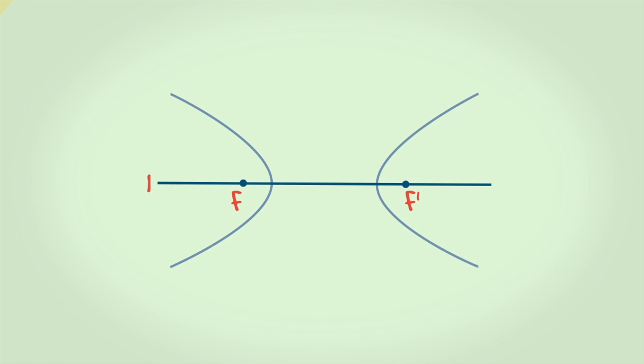La recta L que pasa por los focos se denomina eje focal. Esta corta a la hipérbola en dos puntos V y V' llamados vértices. La porción del eje focal comprendido entre los vértices, el segmento V, V' se llama eje transverso. Al punto medio de este se le denomina centro C. La recta L' que pasa por C y es perpendicular a L la llamaremos eje normal. Este eje no corta a la hipérbola.